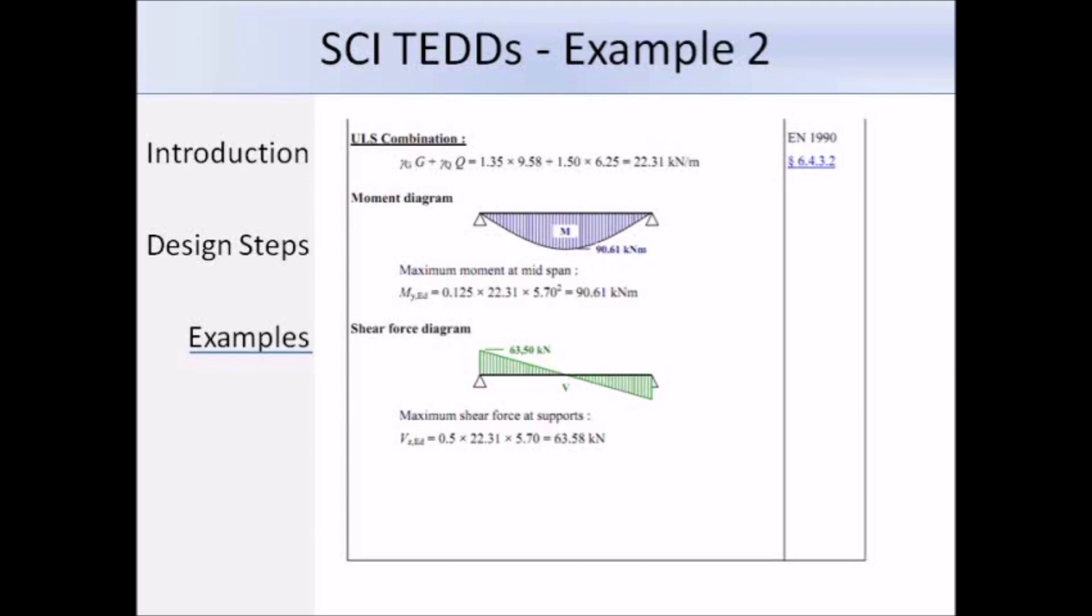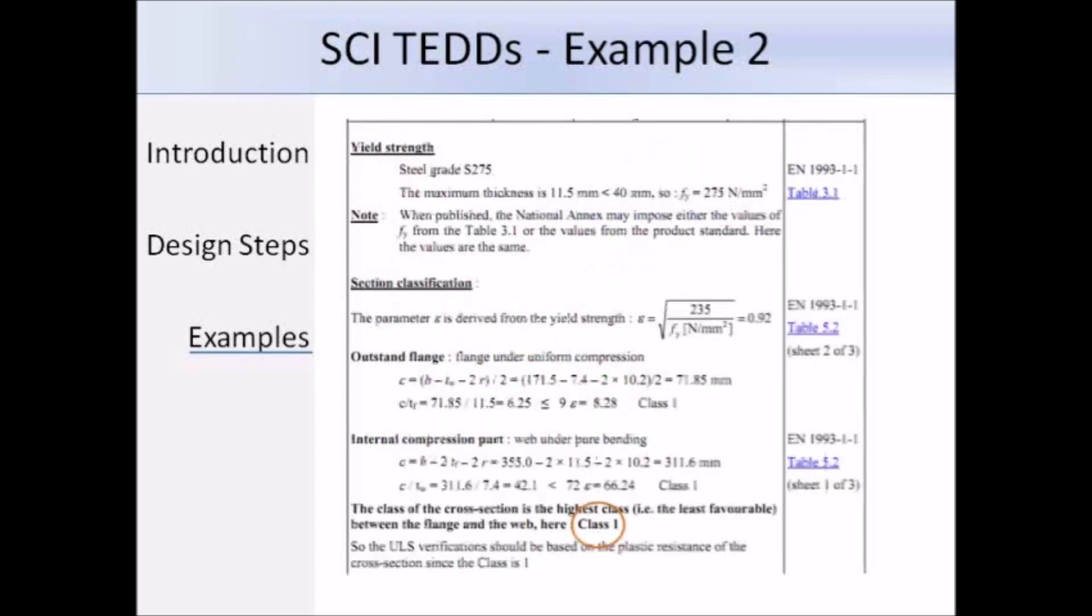And so we need to check that our design buckling resistance is greater than that value. So here, they're finding out the yield strength. They're referring to table 3.1 in eurocodes, so they're getting a value of 275 N/mm². But remember, for design in the UK, we refer to the product standards. But in this case, we'd also get a value of 275 N/mm². Next, they're going to classify the section, so they're referring to table 5.2, and the section is class 1 overall.